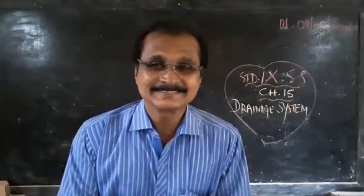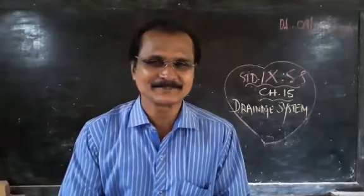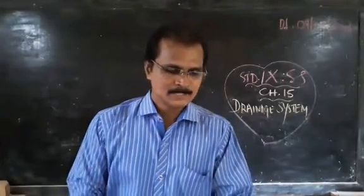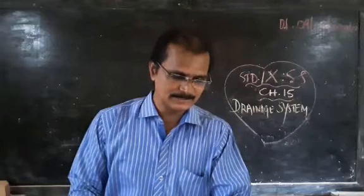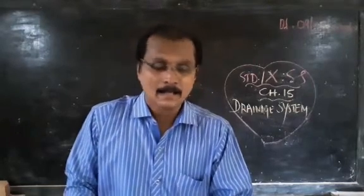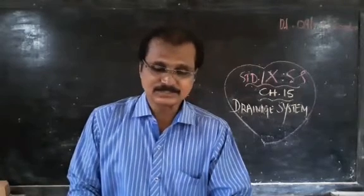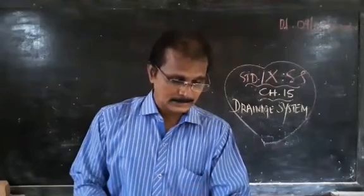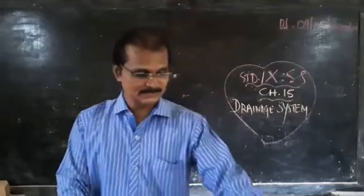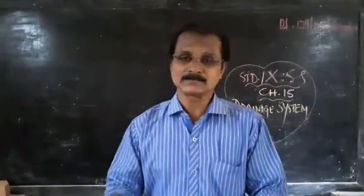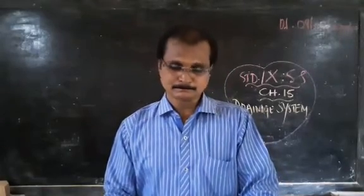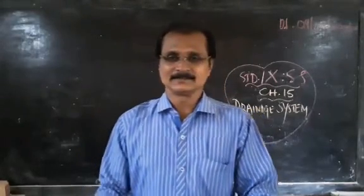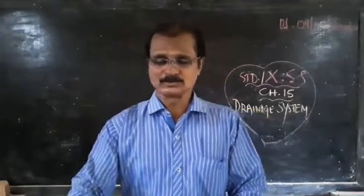Dear students, let us begin a new class working in the presence of the Almighty. Today we will discuss Chapter 15, the Drainage System. In this chapter we will discuss the drainage system of India, which consists of Himalayan rivers and Peninsular rivers, the three stages of the river system — upper course, middle course, and lower course — then the Brahmaputra river system, Peninsular river system, and economic importance of rivers.